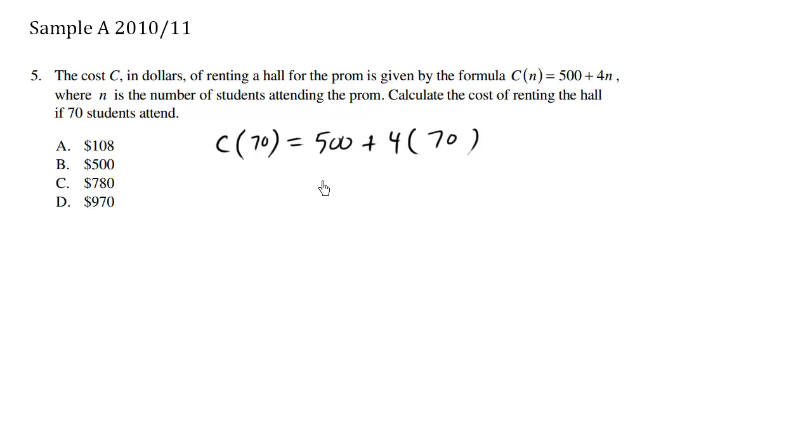Calculate the cost of renting the hall. The cost is simply 500 plus 4 times 70, which is 280, so 500 plus 280 is 780. The answer is C.